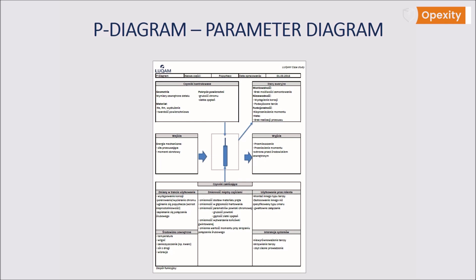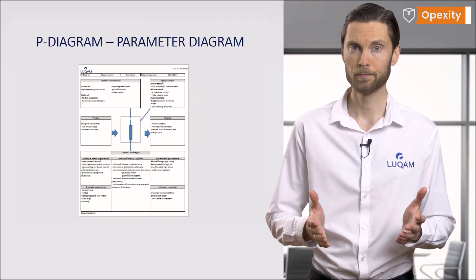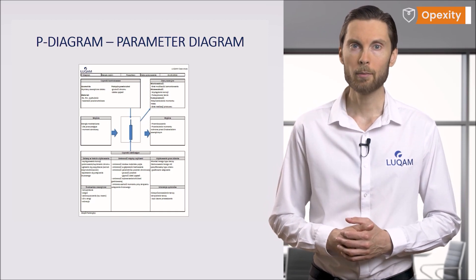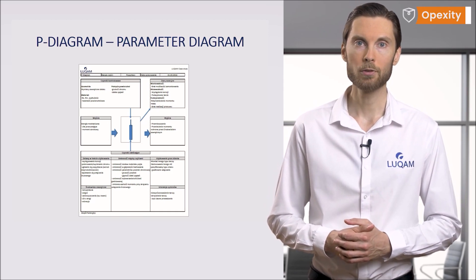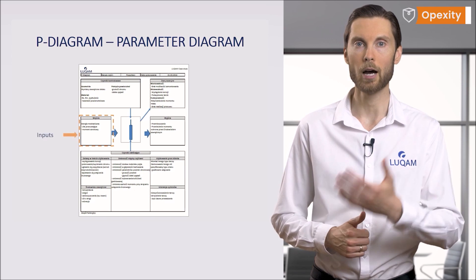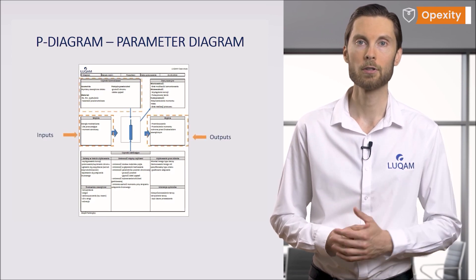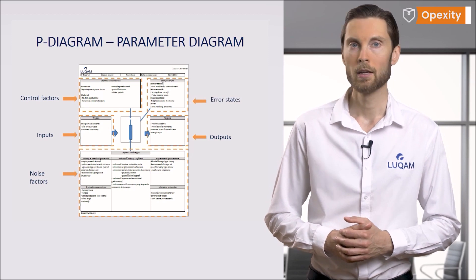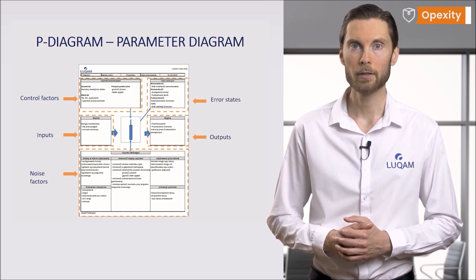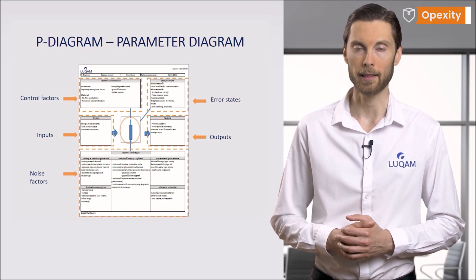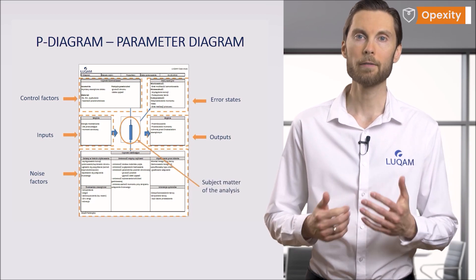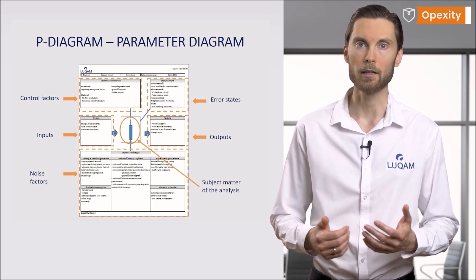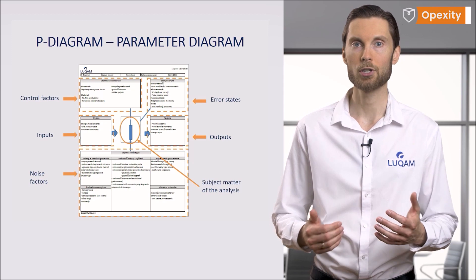That is why the key to success is to understand all the requirements that a product has to meet. Thanks to the parameter diagram (P diagram), we are able to define inputs, outputs, control factors, noise factors, and error states. In the central point of the diagram there is the object to be analyzed, and considering all five aspects we should be able to gather knowledge about the requirements, risks, and functions.